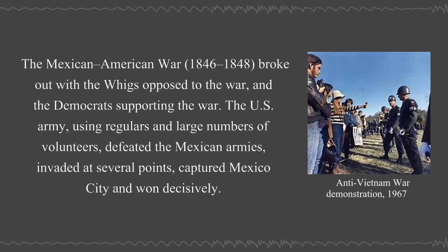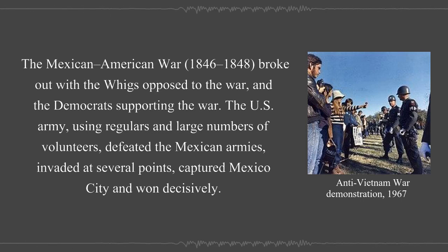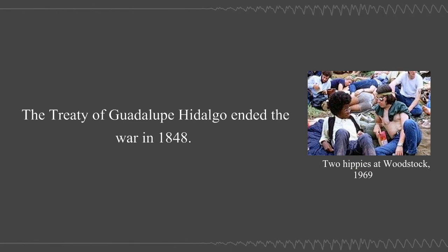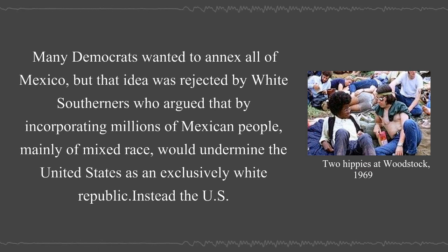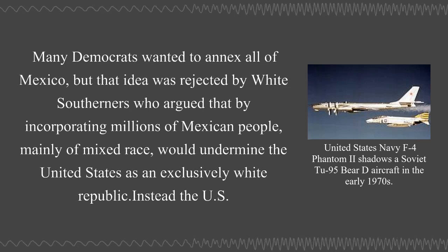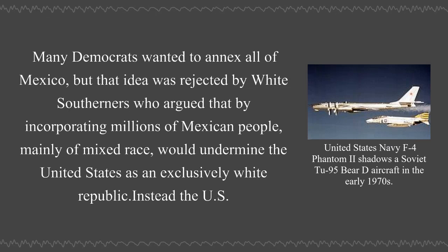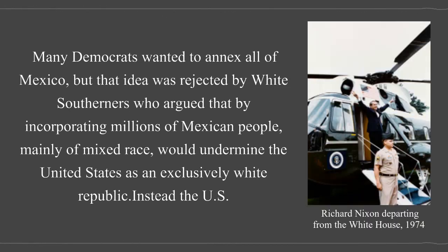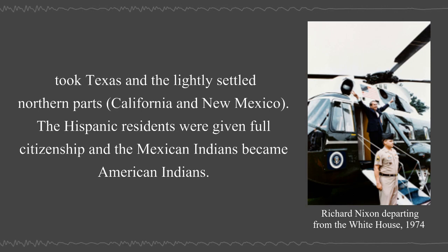The Mexican-American War (1846–1848) broke out with the Whigs opposed and the Democrats supporting the war. The U.S. Army, using regulars and large numbers of volunteers, defeated the Mexican armies, invaded at several points, captured Mexico City, and won decisively. The Treaty of Guadalupe Hidalgo ended the war in 1848. Many Democrats wanted to annex all of Mexico, but that idea was rejected by white southerners who argued that incorporating millions of Mexican people, mainly of mixed race, would undermine the United States as an exclusively white republic. Instead, the U.S. took Texas and the lightly settled northern parts—California and New Mexico. The Hispanic residents were given full citizenship and the Mexican Indians became American Indians.